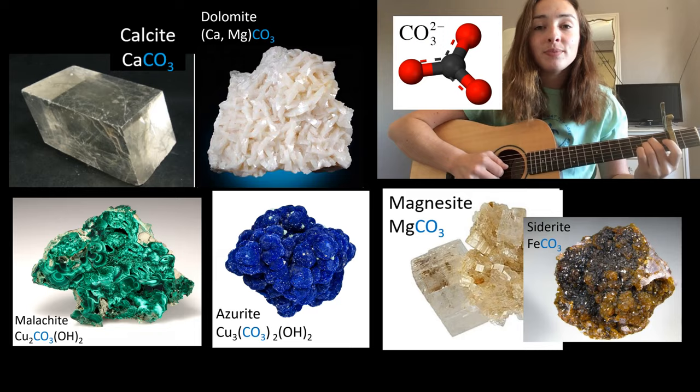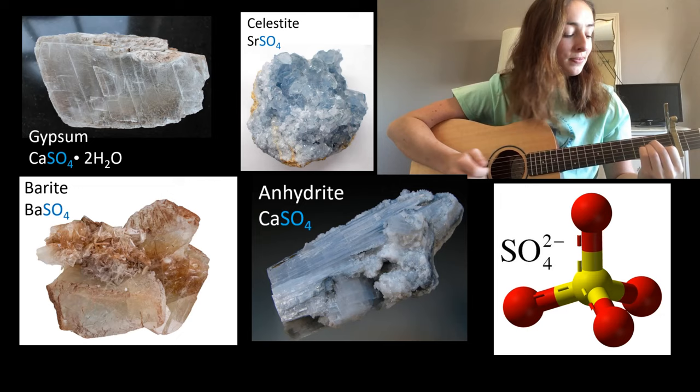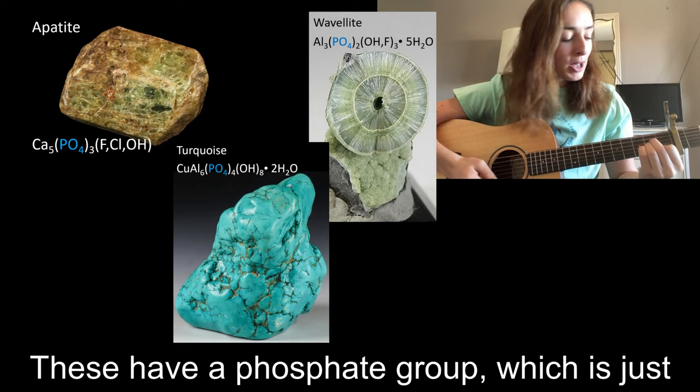Now let's move on to the sulfate minerals, which have a sulfate group — that's sulfur with four oxygen attachments. For the phosphate minerals, these have a phosphate group, which is phosphorus with four oxygen attachments.